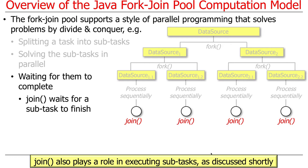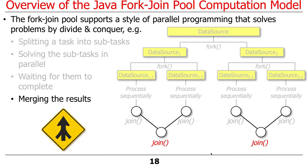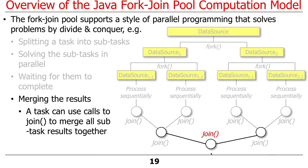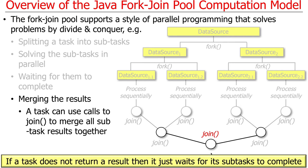As joins complete, they get merged together, and you typically end up with a final join that pulls all the pieces together and gives you back your final result. You'll get a chance to play around with that, and I'll show a whole bunch of examples shortly.